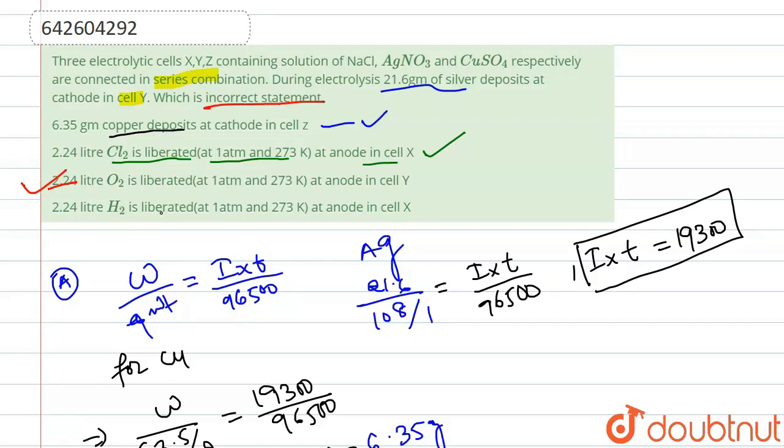Similarly for option D, it is also liberating 2.24 liter of H2. As we know the n factor of Cl2 and n factor of H2 are same, so the value of these two will be also same. These two are same, so this is also correct option. So our incorrect option is only C.